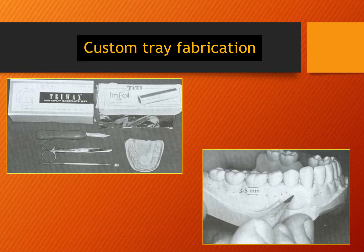For fabrication of a custom tray, the armamentarium required includes baseplate wax, 0.025 mm tin foil, a scalpel, scissors, and waxing instrument. Custom trays are generally made from autopolymerizing resin, sometimes from thermoplastic or photopolymerized resins. The resin thickness should be 2 to 3 mm for adequate rigidity, and the clearance between the tray and the teeth should also be 2 to 3 mm.